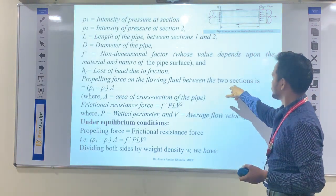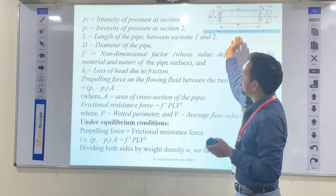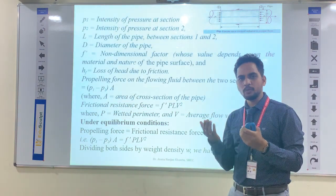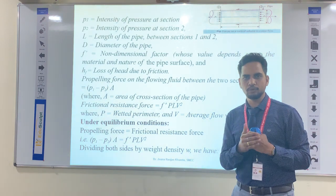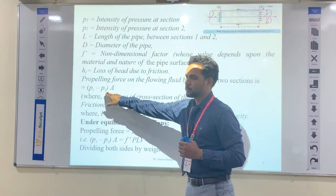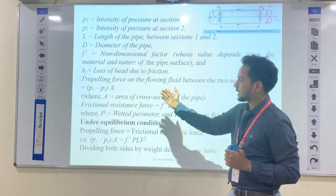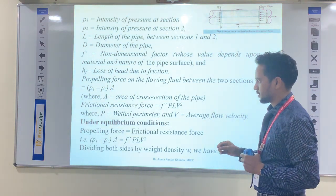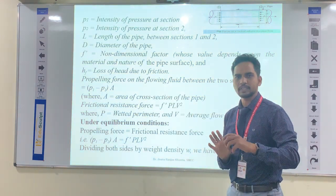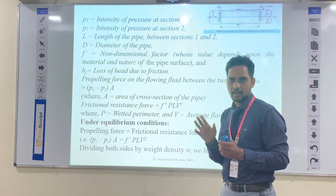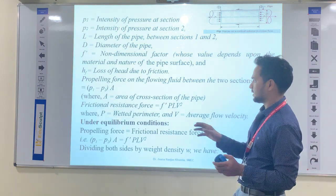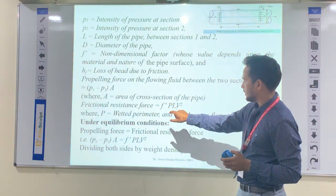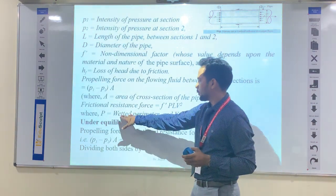The propelling force on the flowing fluid between the two sections is the difference in pressure forces: (P1 - P2) multiplied by the cross-sectional area A, since force equals pressure times cross-sectional area. This force is known as the propelling force. The frictional resistance force — due to friction at the boundary — is defined as F-dash × P × L × V², where P is the wetted perimeter and V is the average flow velocity.